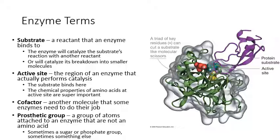A really common prosthetic group is a phosphate group that gets attached to the enzyme — actually the most common one. Usually, if you're an enzyme that uses prosthetic groups, when you have that prosthetic group attached you are active and functional, and when it detaches, you inactivate.